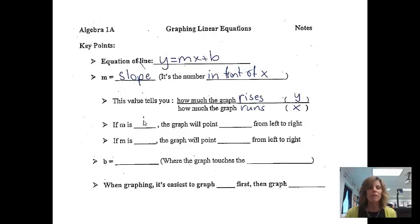If m is positive, we will find the graph will point up. And if m is negative, the graph will point down as we go from left to right. And then the last thing is my b. My b is going to be my y-intercept, and that's basically where the graph touches the y-axis. I find that when I'm graphing, it's easiest to graph the b first, and then we'll graph the slope, or the m.